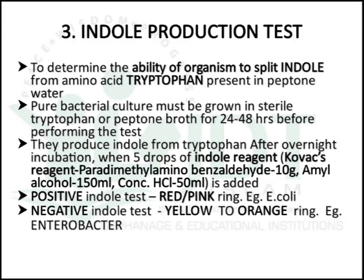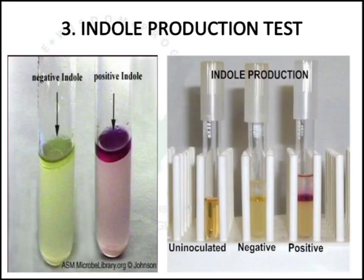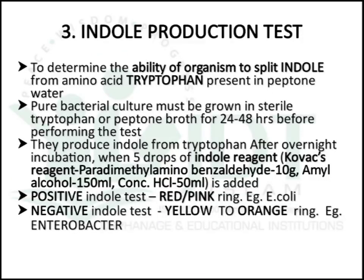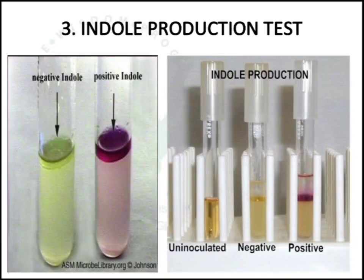The next test is the indole production test, used to determine the ability of a microorganism to split indole from the amino acid tryptophan present in peptone water. The pure culture must be grown in sterile tryptophan or peptone broth for 24 to 48 hours. After incubation, we add Kovac's reagent, which consists of para-dimethylaminobenzaldehyde, amyl alcohol, and concentrated HCl. A pink or red ring indicates a positive result (e.g., E. coli), and yellow to orange ring indicates negative (e.g., Enterobacter). Positive gives purple color; negative gives yellow to orange ring at the top of the test tube.